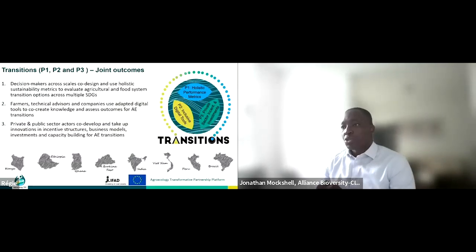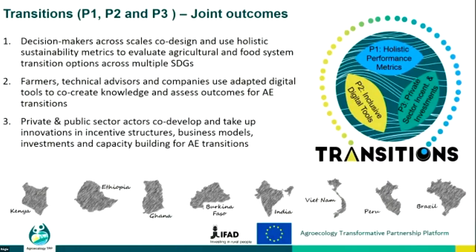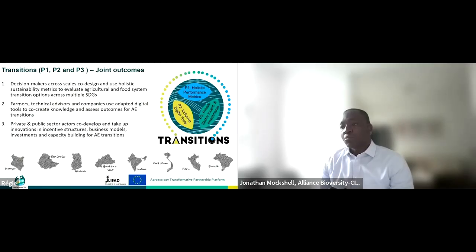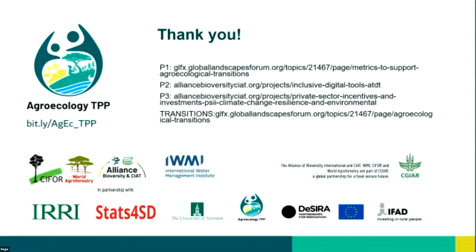Across the three different projects — metrics, digital tools, and private sector incentives and investments — we aim to provide information important for the future. First, decision makers will be able to co-design and use holistic sustainability metrics. Second, on digital tools, companies will use inclusive digital tools to co-create knowledge and assess outcomes. Third, for component three, private sector incentives and mechanisms will be taken up by both the private sector and farmers, with business models important for sustaining the practices promoted across different countries. We also want to thank our partners, the EU and EFAD for managing this, and all the partners we are working with in the different landscapes.